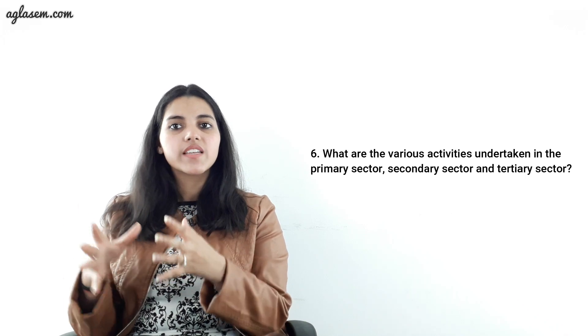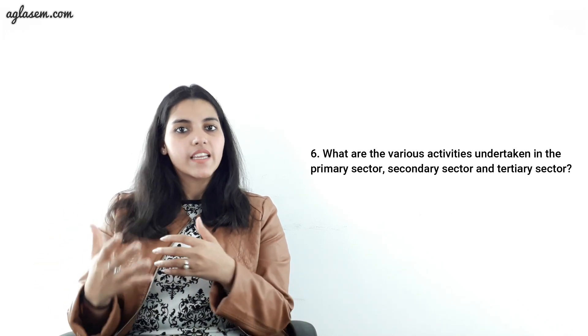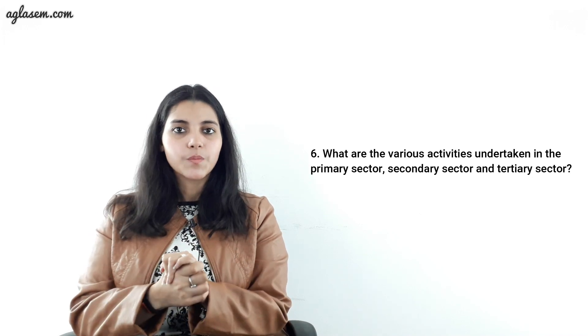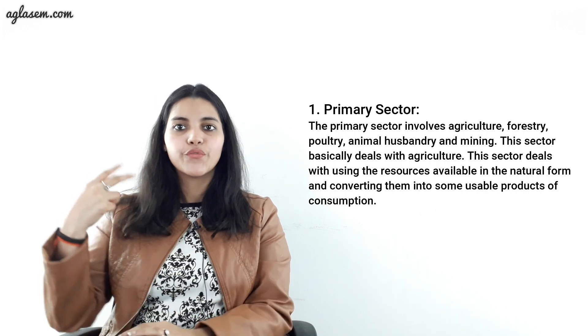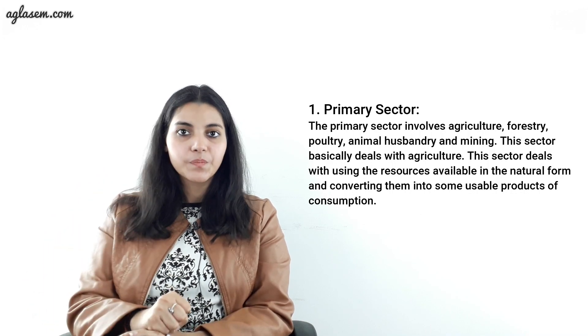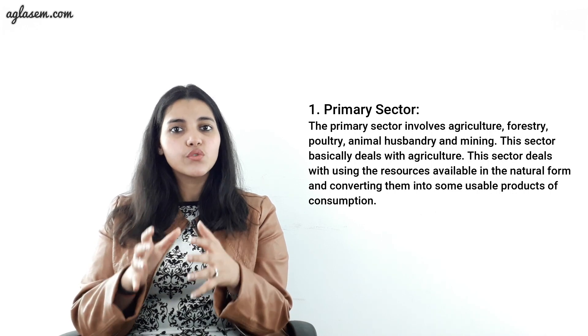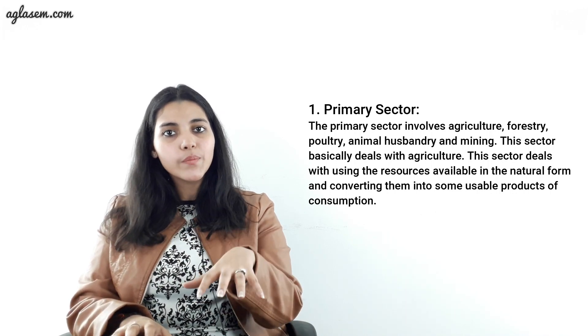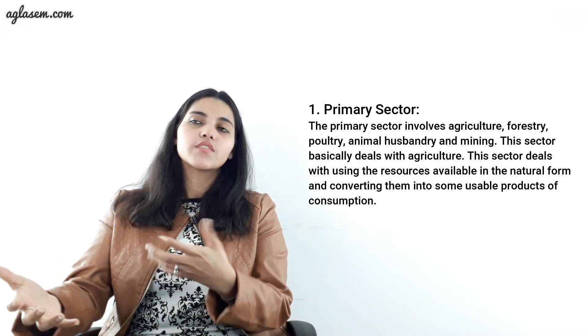Question number 6: what are the various activities undertaken in the primary sector, secondary sector, and the tertiary sector? Starting with the primary sector, the various activities under it are agriculture, forestry, poultry, animal husbandry, and mining. This sector basically deals with using resources available in natural form and converting them into usable products for consumption.